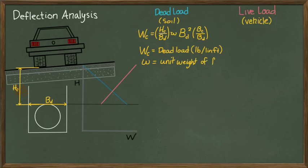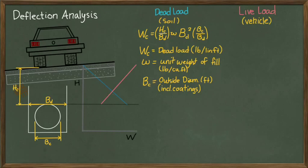W is the unit weight of the trench fill in pounds per cubic foot. The bc term is the outside diameter of the conduit measured in feet, including any coatings of the pipeline.